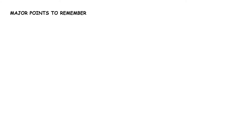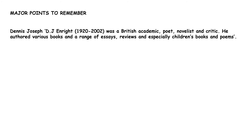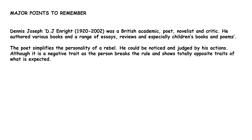Here are various points to remember from the chapter. Dennis Joseph Enright is the full form of D.J. Enright, who was a British academic poet, novelist, and critic. He authored various books, a range of essays, reviews, and especially children's books and poems. The poet simplifies the personality of a rebel — he could be noticed and judged by his actions. Although it is a negative trait as the person breaks the rules and shows totally opposite traits to what is expected.